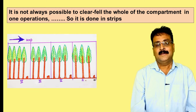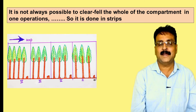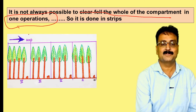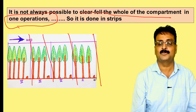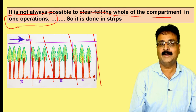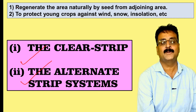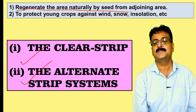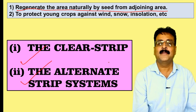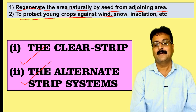In the clear felling system, the entire compartment is cut down in one operation, but sometimes that is not possible. So we divide the compartment into strips and fell them annually. The clear strip system and the alternate strip system are used when the objective is to regenerate the area naturally by seed from the adjoining area, and for the protection of young crops against wind, snow, and insolation.